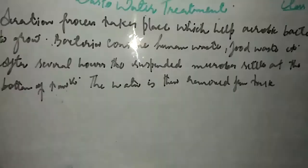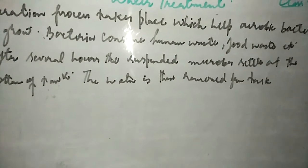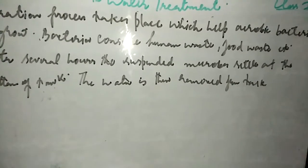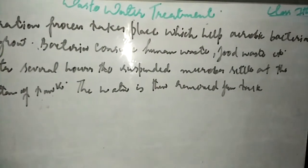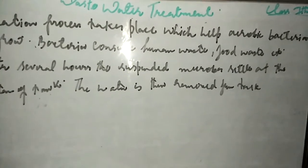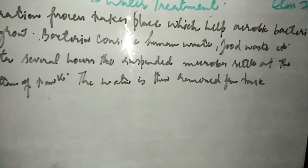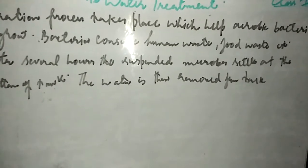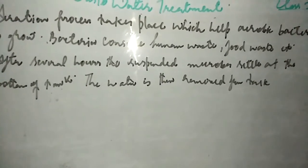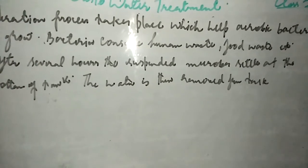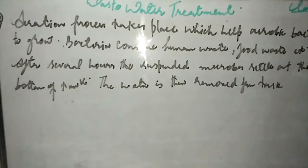The aerobic bacteria consume human waste, food waste, soaps, and other unwanted matter. After a few hours, the microbes settle as activated sludge at the bottom of the tank. The clear water at the top is removed and processed through drying beds or machines. The settled sludge can be used as organic manure or returned to the process.